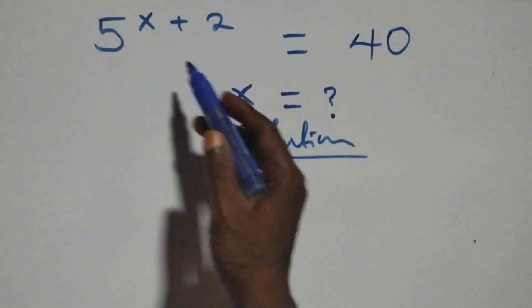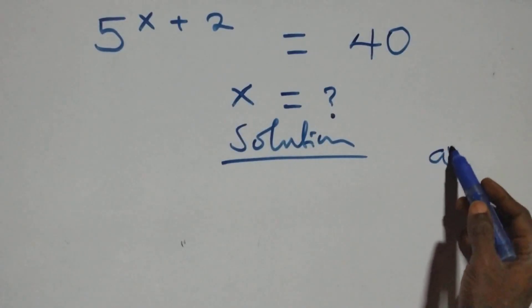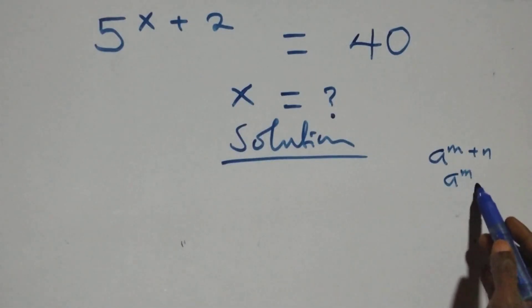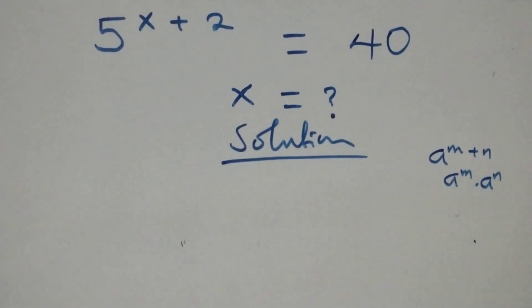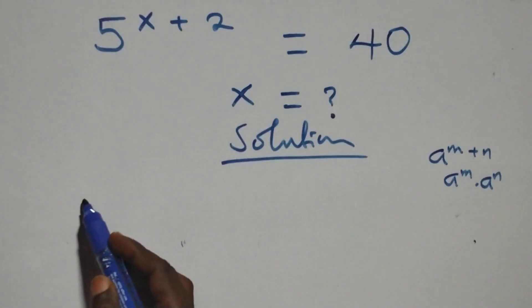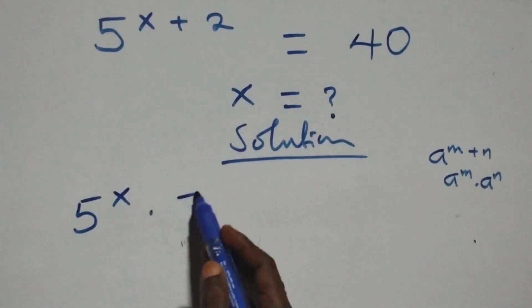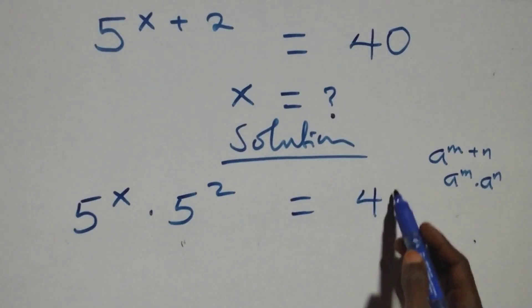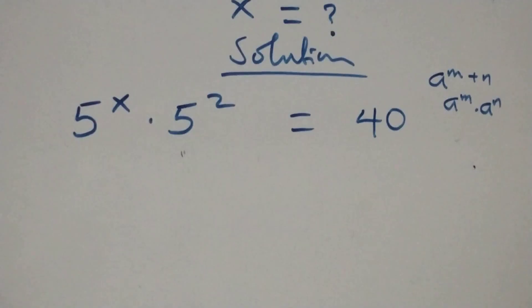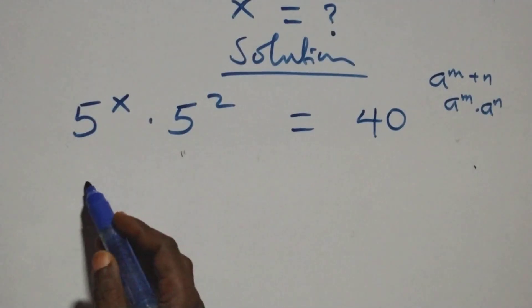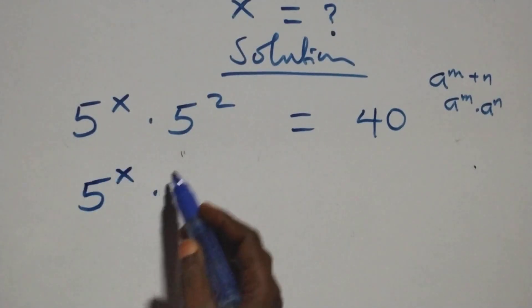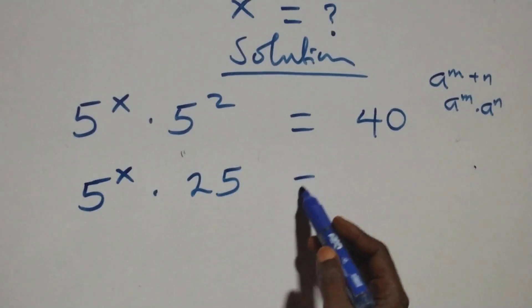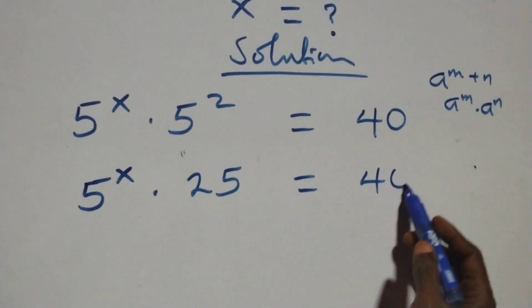What we have here — we have a raised to power n plus n, which is the same as a raised to power n times a raised to power n. This becomes 5 raised to power x times 5 squared equals 40. We can write 5 squared as 25, so 5 raised to power x times 25 equals 40.